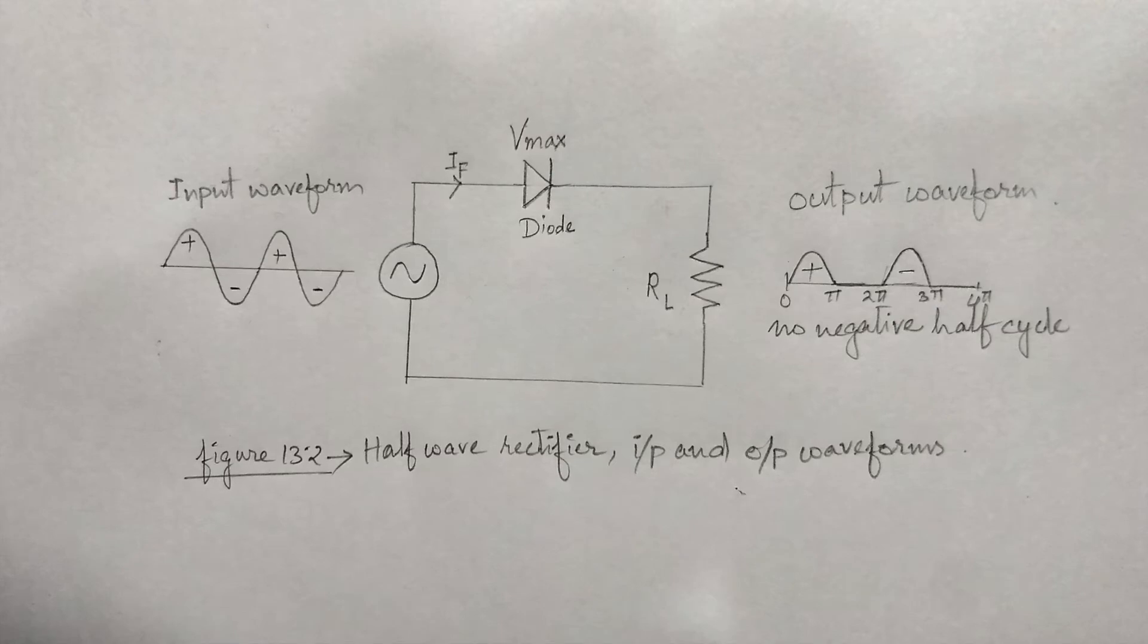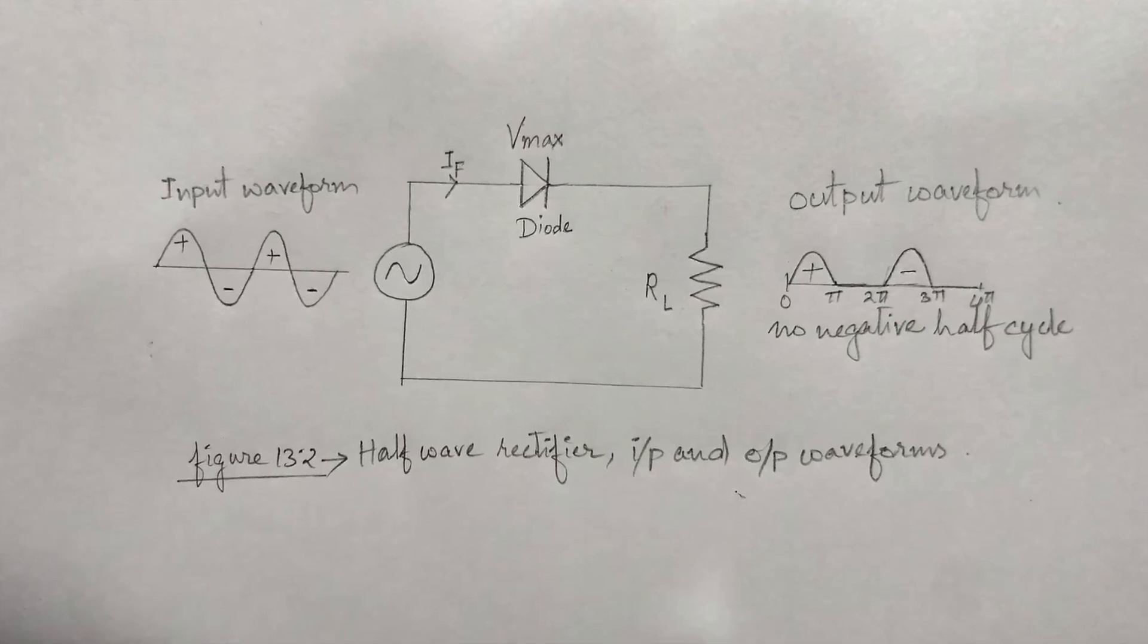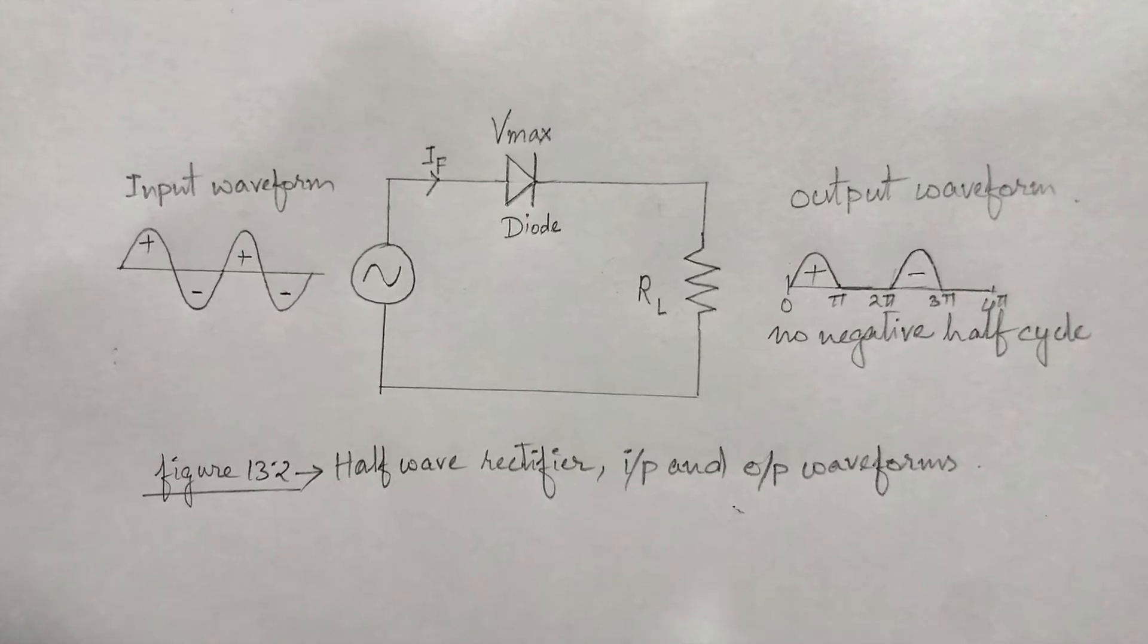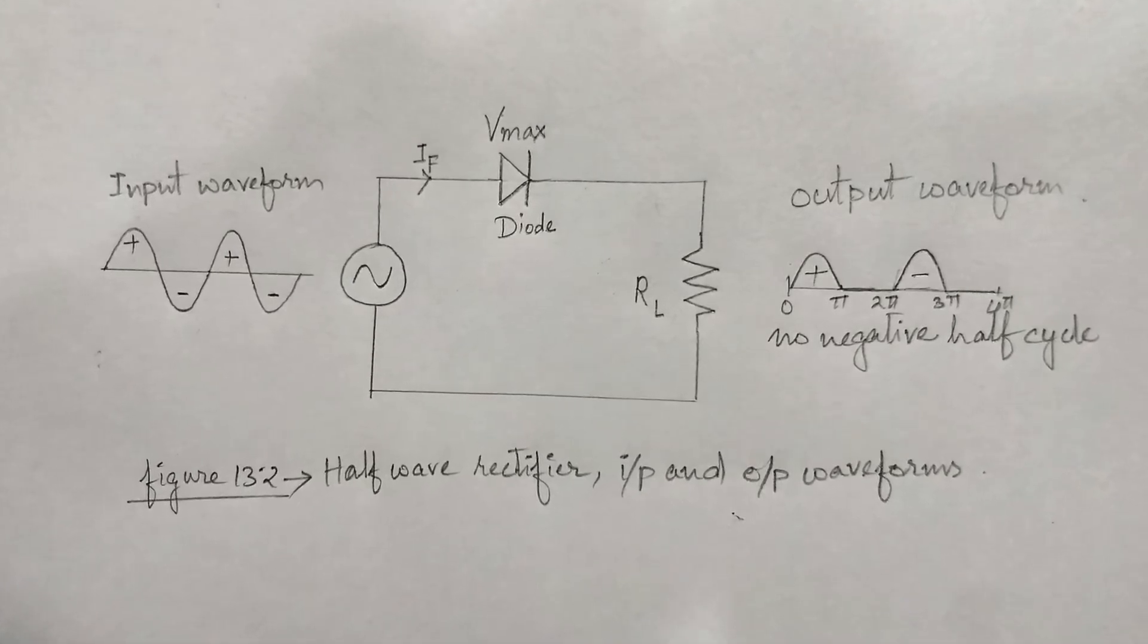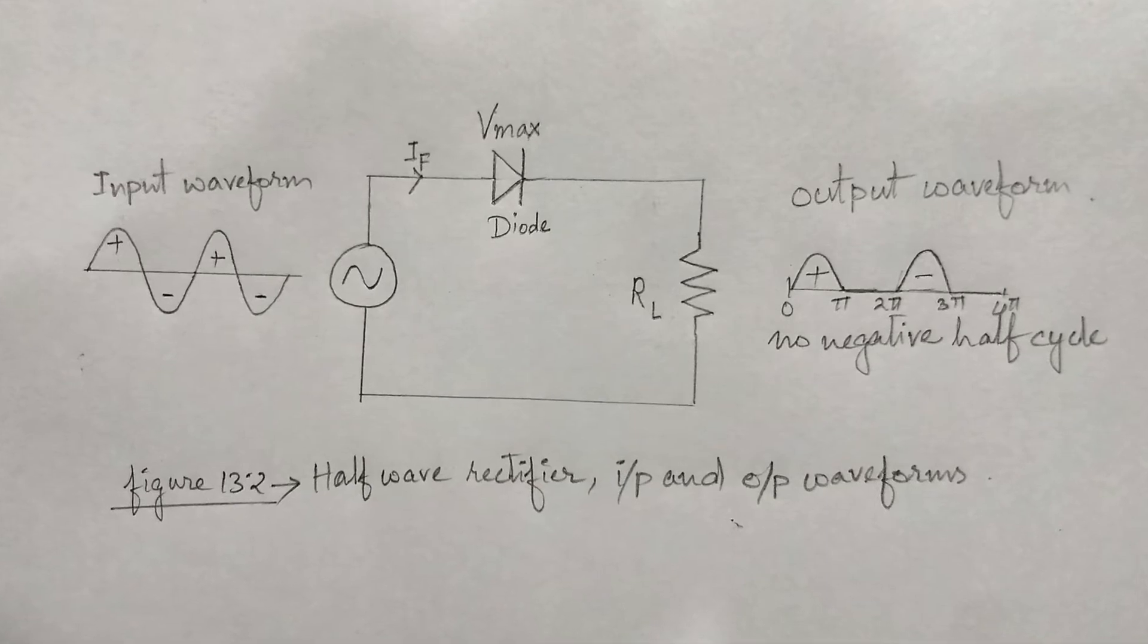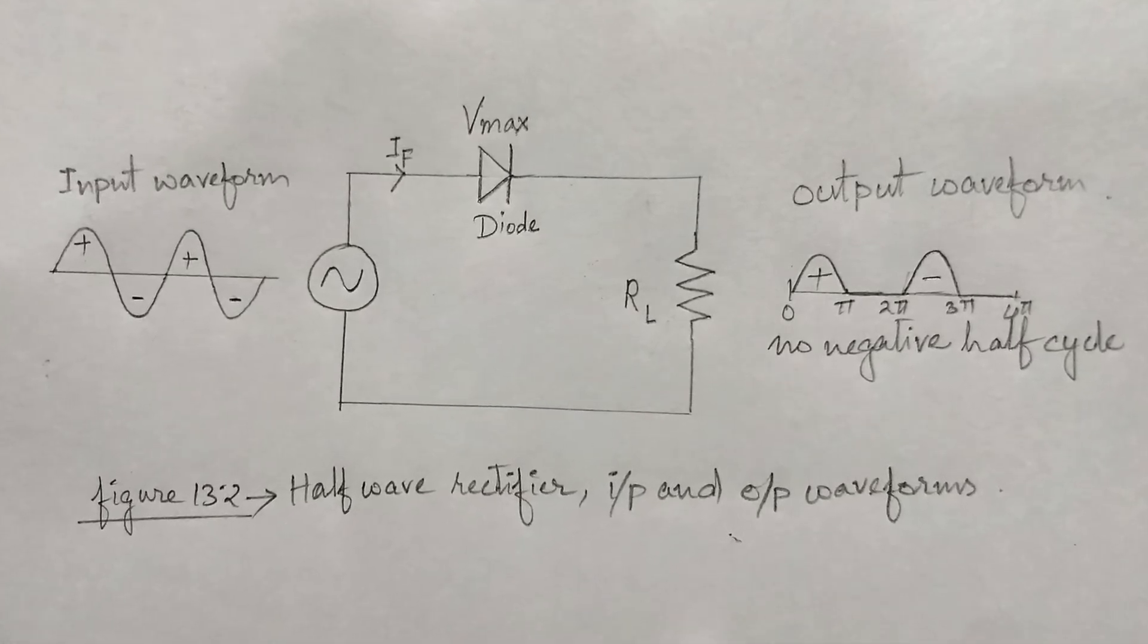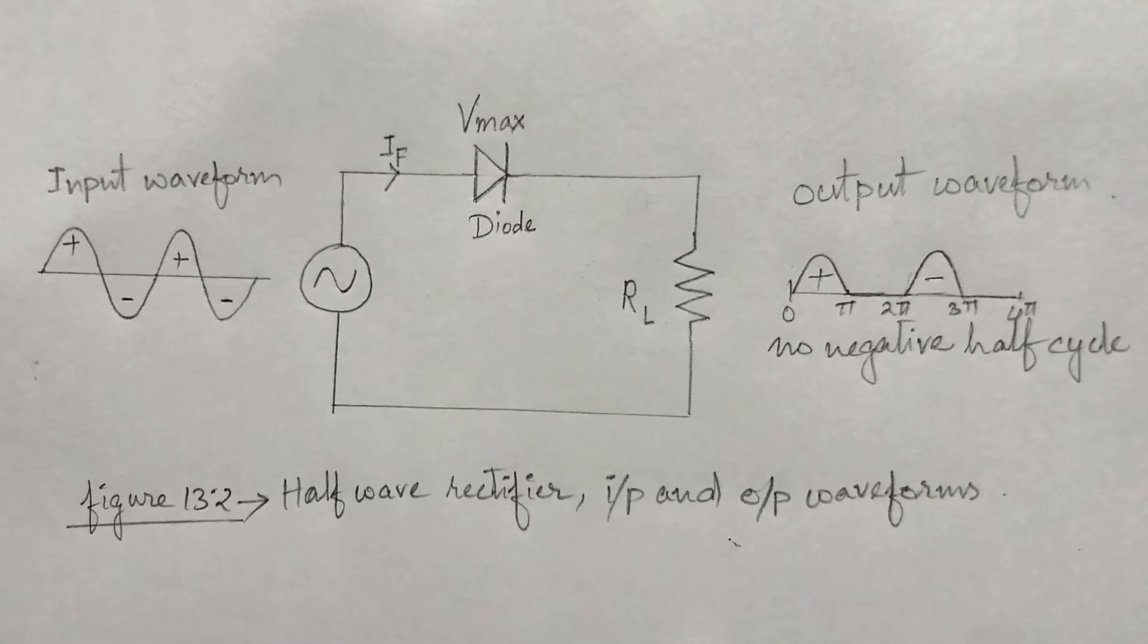A rectifier is a circuit that converts AC voltage or signal to DC signal. In general, it converts alternating current to direct current and mostly used in the power supply section of an electronic circuit, because a DC voltage supply is most essential in any electronic circuit.